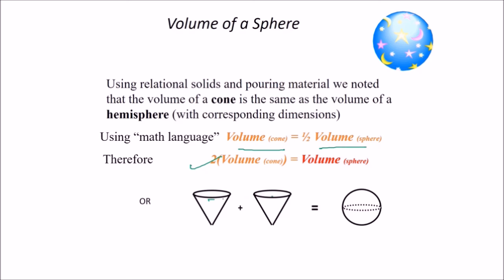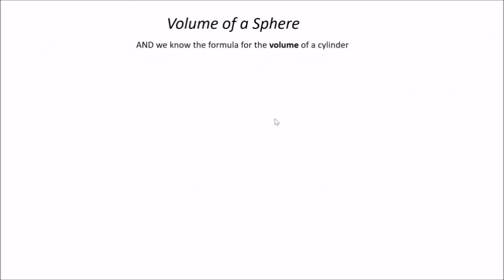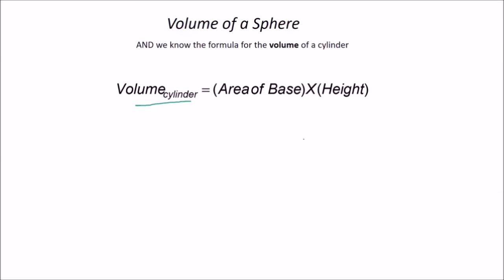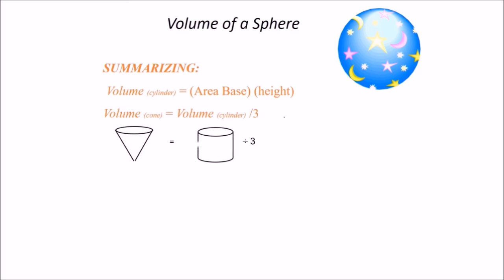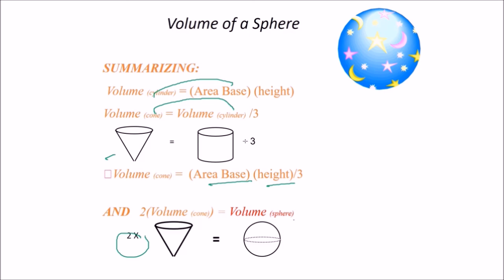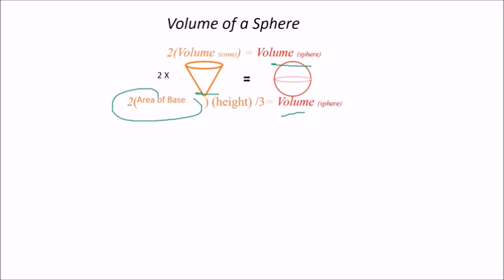Two times the volume of the cone equals the volume of the sphere. Volume of cone is (1/3) π r² h, and volume of cylinder is π r² h, so volume of cone is volume of cylinder divided by 3. Therefore, volume of sphere = 2 × (1/3) π r² h = (2/3) π r² h.